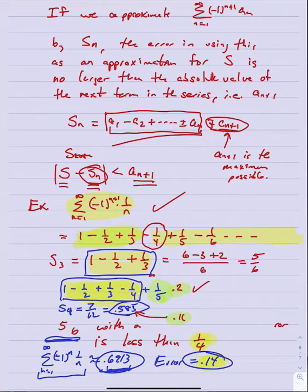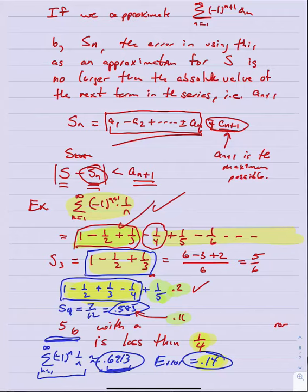This is one of the few series types with such a simple way to estimate the quality of a partial-sum approximation. As we'll see in upcoming sections, this is one of the primary practical uses of infinite series — approximating sums when we can't find the exact value. Alternating series are the simplest case: stop after n terms, and the error is no larger than the absolute value of the (n+1)th term. We'll stop there — let me know if you have any questions.